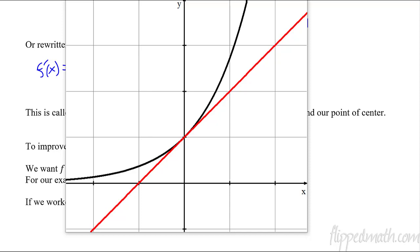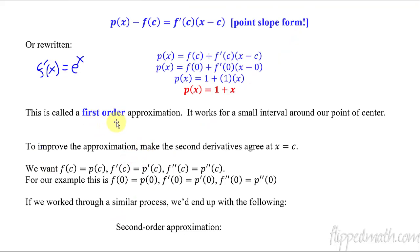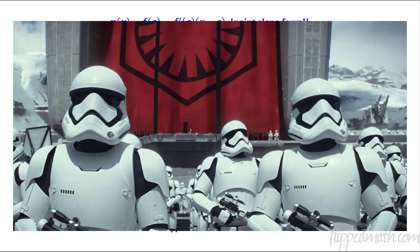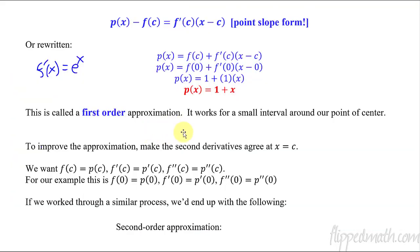This is a decent approximation if you're close to x equals 0, but the further away you get from x equals 0 — moving to the right or to the left — the approximation is going to have a bigger error. We're not going to be very close. This is called a first-order approximation: for a very small interval it's just going to be linear. Not a very good approximation, but that's what it's called — first order.